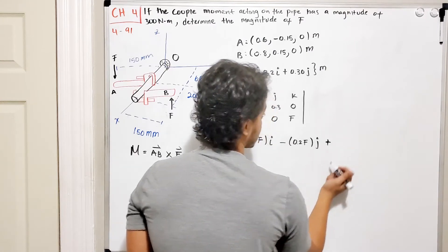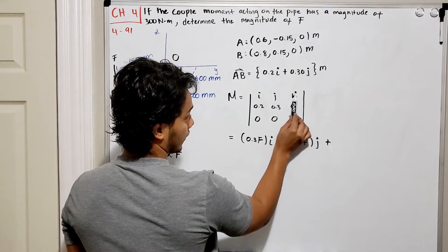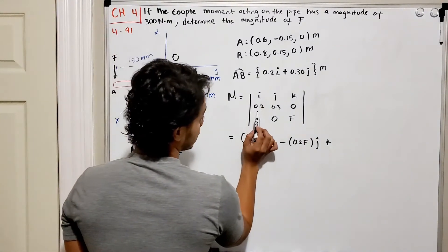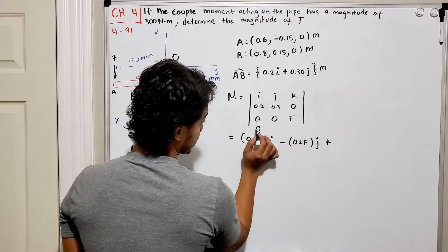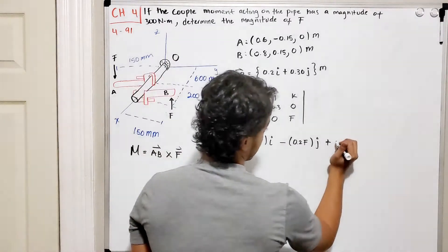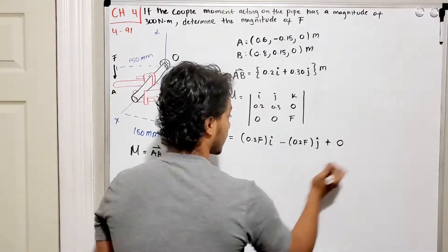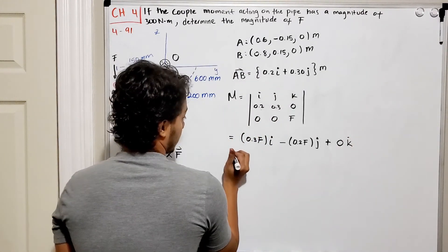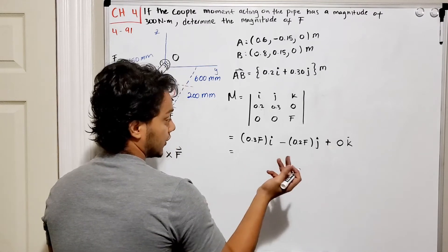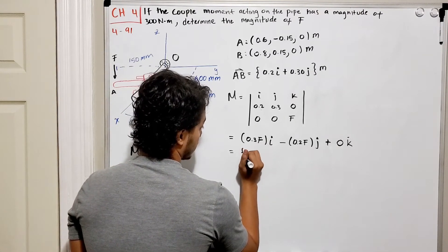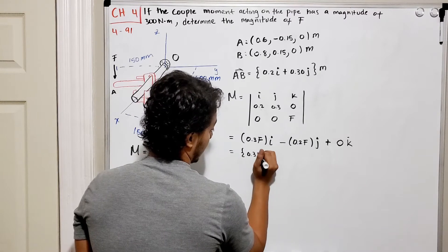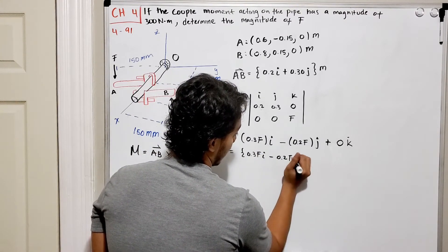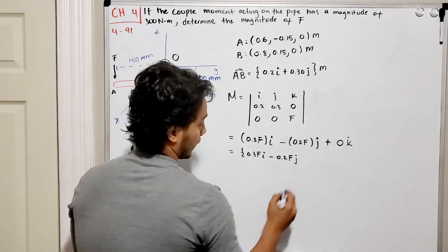For the k-component, hiding the k column and row leaves 0.2 times 0 and 0 times 0.3, which gives 0 in the k-direction. So the moment vector is 0.3F in the i-direction minus 0.2F in the j-direction.